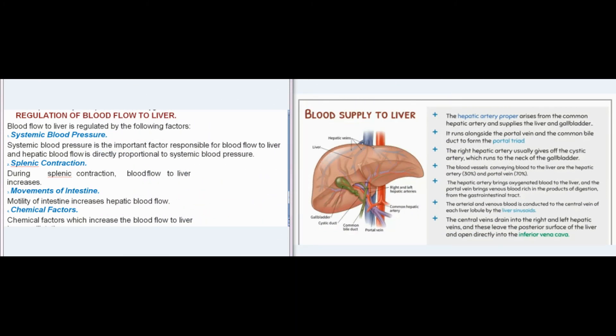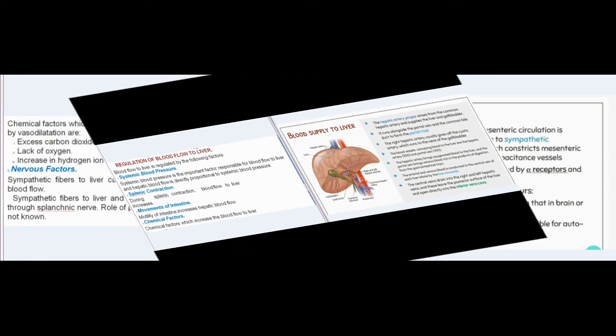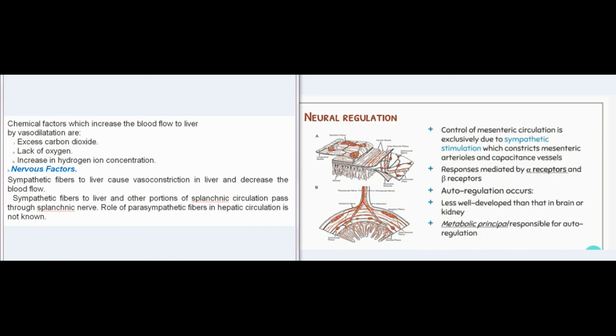Regulation of blood flow to the liver is governed by the following factors. Systemic blood pressure is the important factor responsible for hepatic blood flow, which is directly proportional to systemic blood pressure. During splenic contraction, blood flow to the liver increases. Motility of the intestine also increases hepatic blood flow.